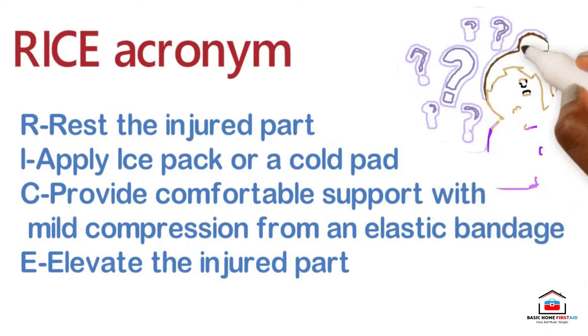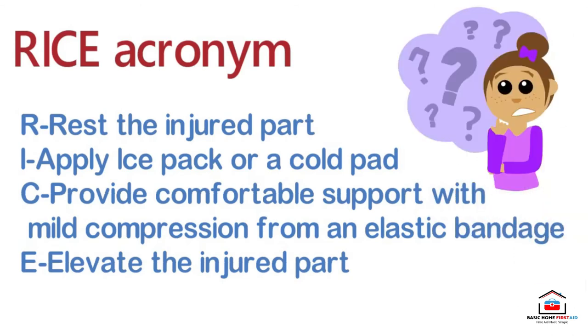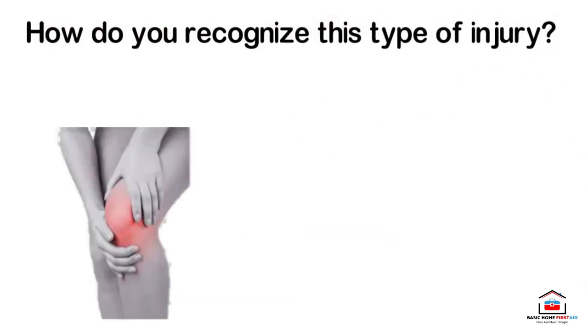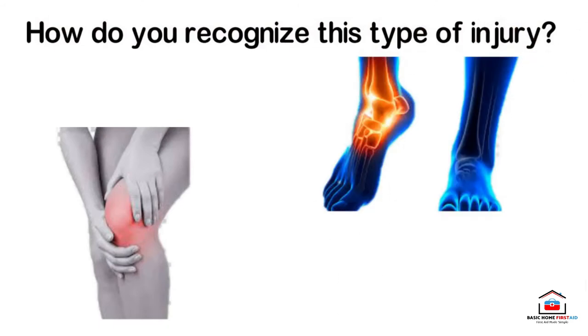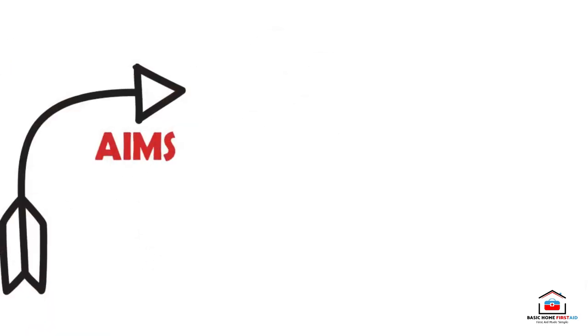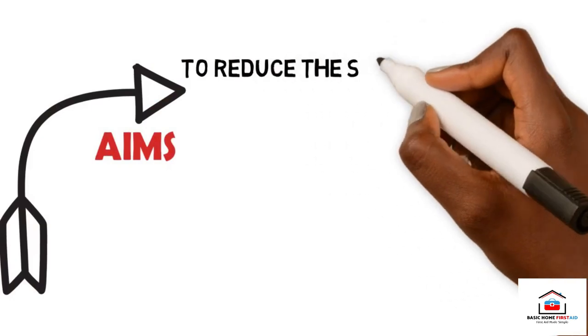How do you recognize this type of injury? There may be pain and tenderness, difficulty in moving the injured part especially if it is a joint, and swelling and bruising in the area. Your aims with such a casualty are to reduce swelling and pain, and to obtain medical help if necessary.